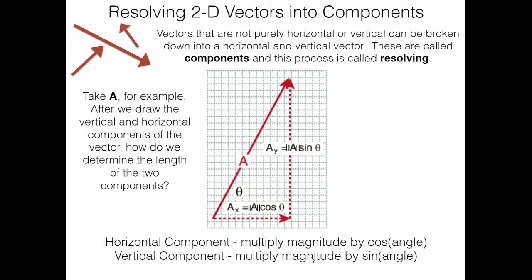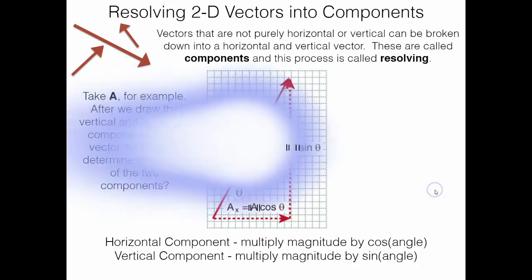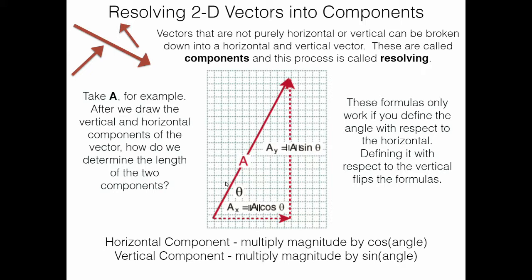To get the horizontal component, multiply the magnitude of the original vector by cosine of theta. For the vertical component, multiply by sine of theta. Make sure this angle is defined with respect to the horizontal, not the vertical. If the angle were measured from the vertical instead, you would flip the formulas: A_y would be A·cos(theta) and A_x would be A·sin(theta). For simplicity and consistency, we define the angle with respect to the horizontal by default.